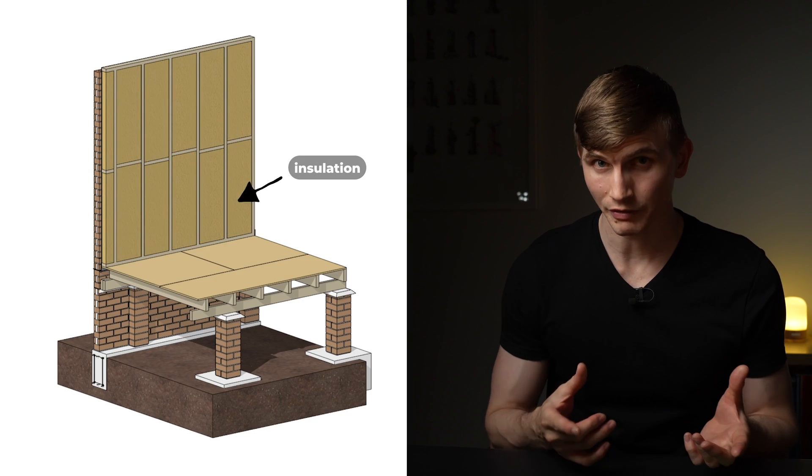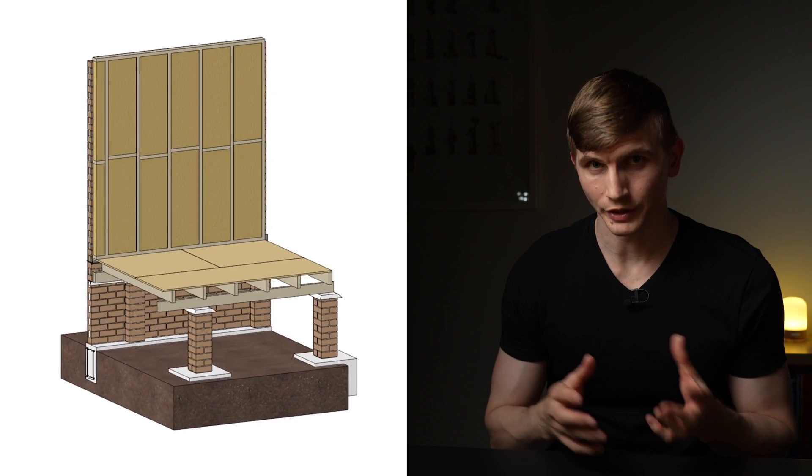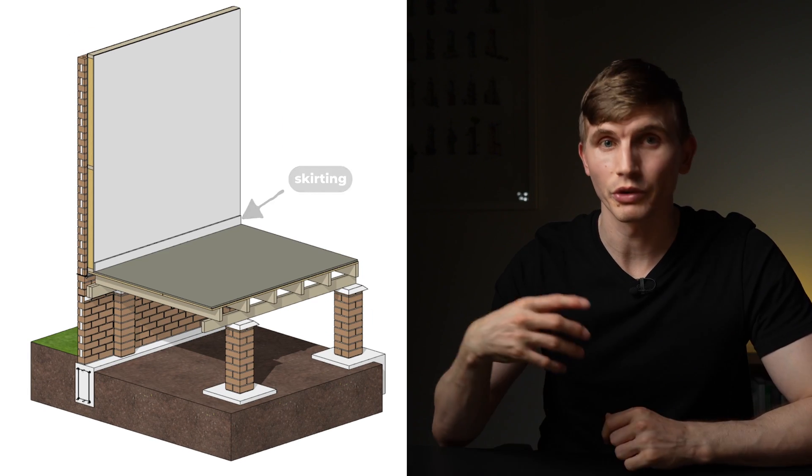Insulation is placed inside the stud cavity and insulation is material used to slow or reduce the flow of heat. Plasterboard is fixed to the wall frame. Flooring is installed over the subfloor and skirting slash baseboard is installed over the plasterboard.